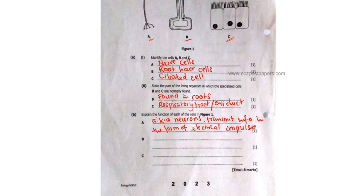For B, we have the root hair cells. The function of the root hair cells is to absorb water and mineral salts from the soil, which goes through the stem to the leaves.